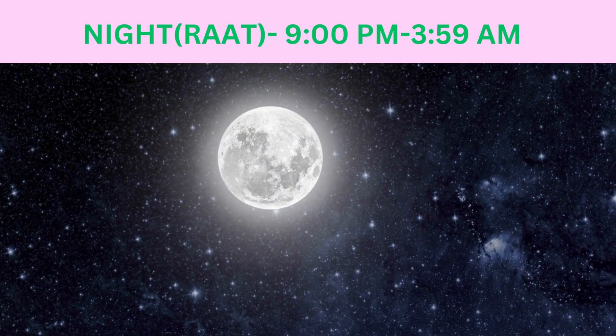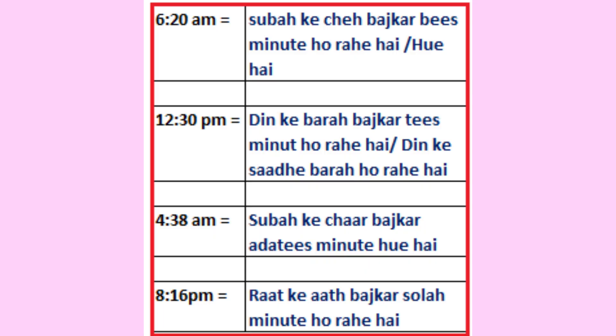Let's revise once again with examples. 6:20 AM — subah ke 6 baj kar 20 minute huye hain. 12:30 PM — din ke saade baarah ho rahe hain. 4:38 AM — subah ke 4 baj kar 38 minute huye hain. 8:16 PM — raat ke 8 baj kar 16 minute huye hain.